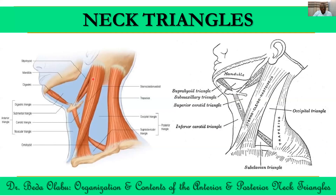Here we talk about the triangles. We divide the neck triangles into two based on the location of the sternocleidomastoid: behind sternocleidomastoid is the posterior triangle, and anterior to sternocleidomastoid is the anterior triangle. The posterior triangle is defined by the posterior border of sternocleidomastoid, the anterior border of trapezius, and the middle one-third of the clavicle. If we introduce the inferior belly of omohyoid, we divide the posterior triangle into the occipital triangle above and the supraclavicular triangle below, also called the subclavian triangle.